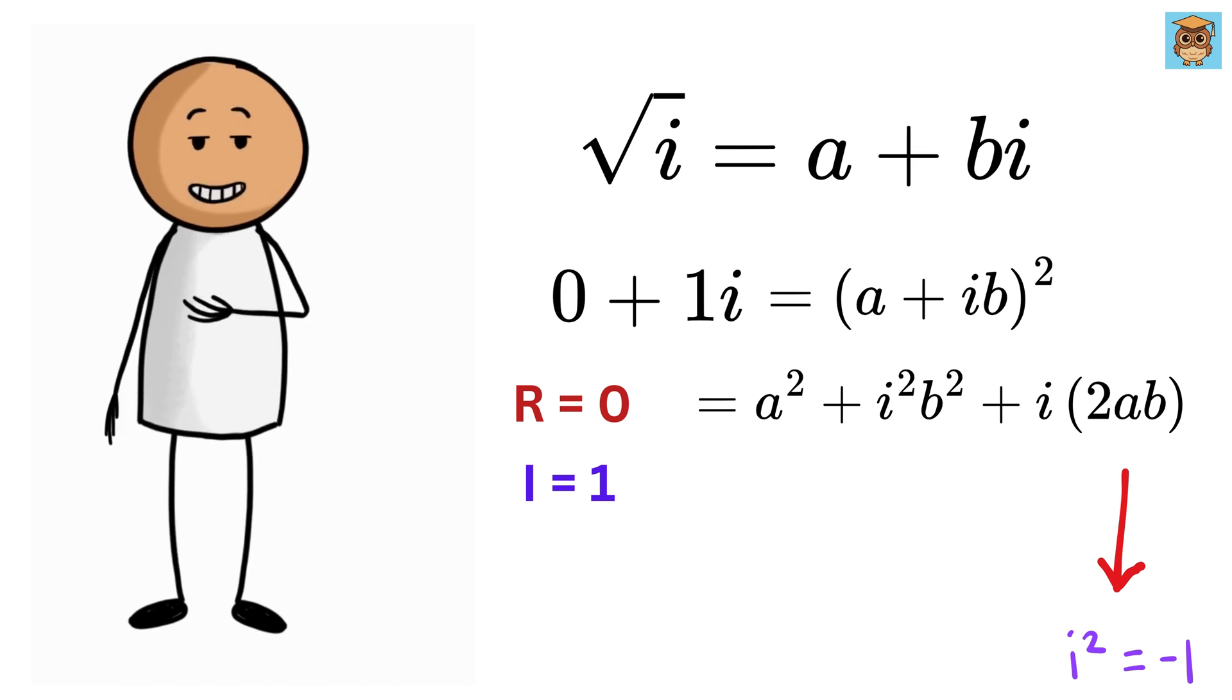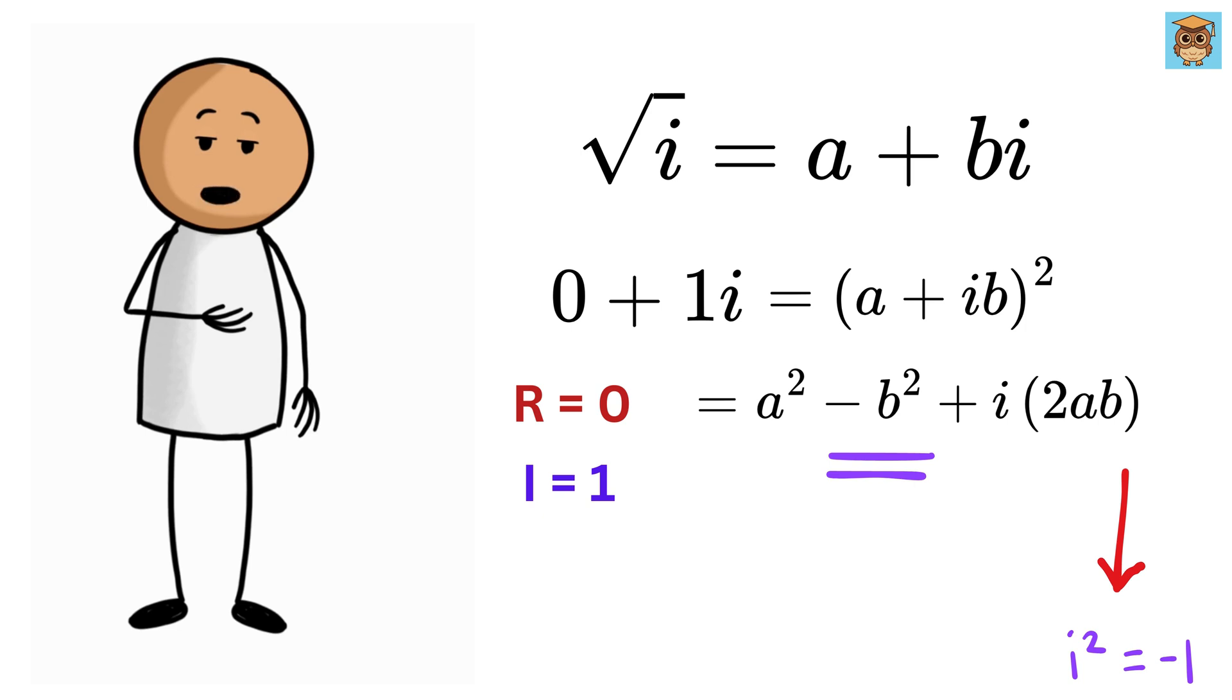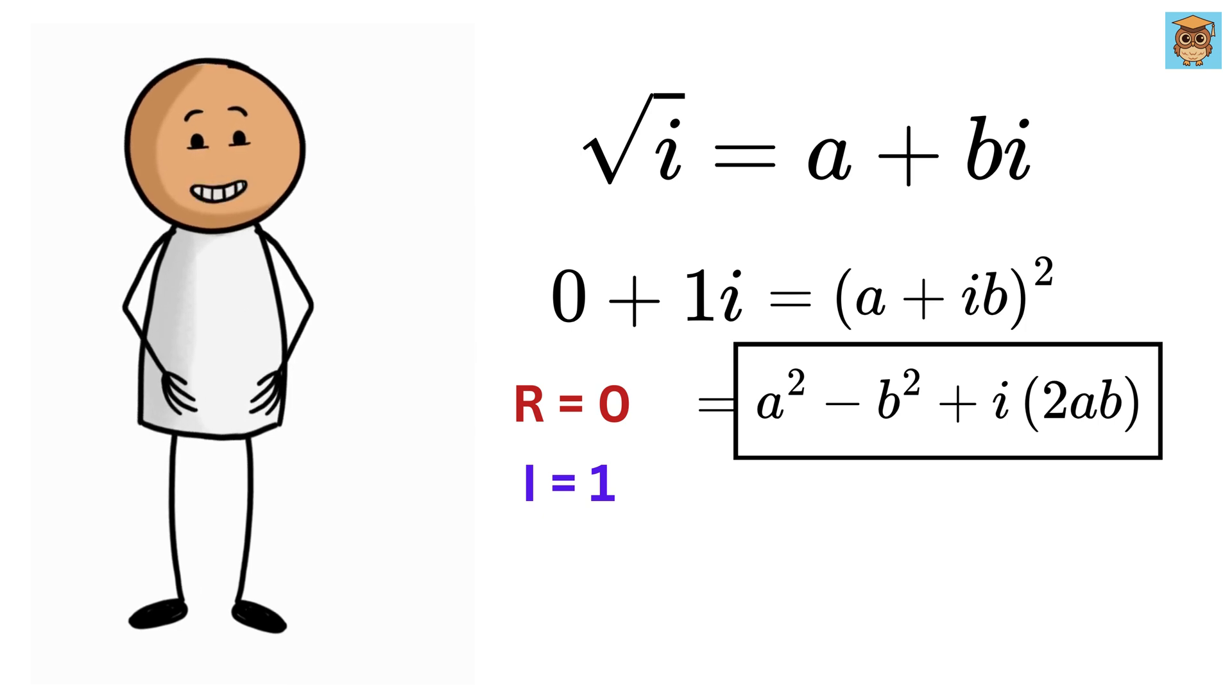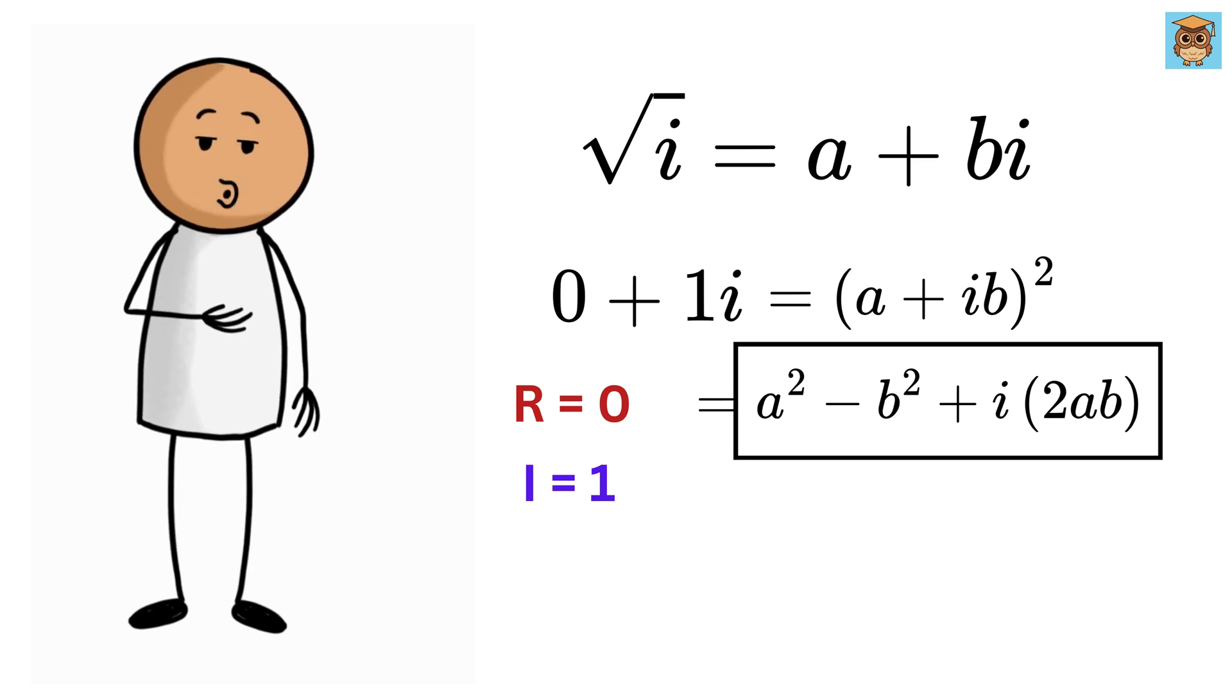Look here, we have i² equals minus 1, so this will become minus b². Thus, (a + ib)² equals a² - b² + 2abi.